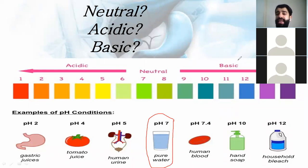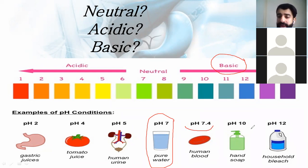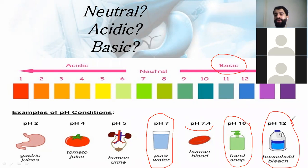For values greater than 7, it is basic — for example, 9, 10, 11, 12, 13, 14. Human blood has a pH of 7.4, soap has pH 10, and household bleach has pH 12. These are all basic. As we move from 7 upward, the basicity increases, so pH 14 is the most basic.